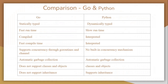Comparison of Go and Python: Go is a statically typed language and Python is a dynamically typed language. Go has fast runtime while Python has slow runtime. Go has fast compile time; Python is an interpreted language so it takes more time. Go supports concurrency through Go routines and channels, while Python has no built-in concurrency mechanism. Both Go and Python have automatic garbage collection. Go does not support classes and objects, while Python supports classes and objects. Go does not support inheritance, but Python supports inheritance.